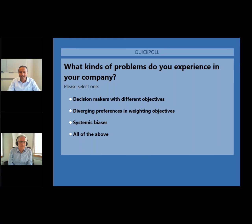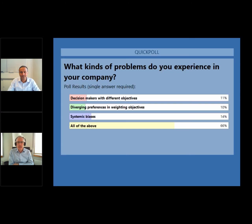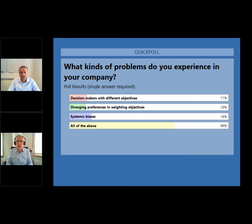Talking about biases right now — out of the three options, we may already be biasing the participants into voting more on the third one. It looks like the voting has come to an end. Lindsay, close the poll and let's have a look at the results. Each of the different categories — having different objectives, weighting the objectives differently, or having biases in general — are about equally weighted. So it's not surprising that all of the above are prominent in the observations of the participants. Let's go back to the presentation.